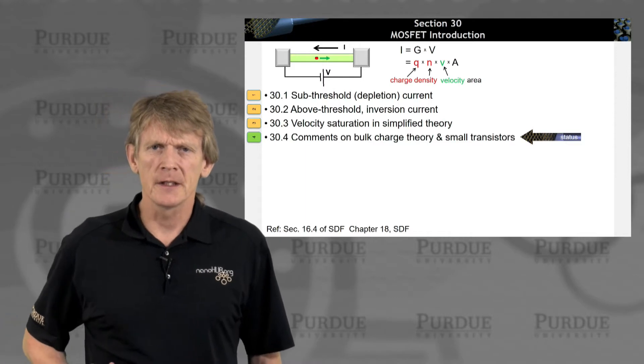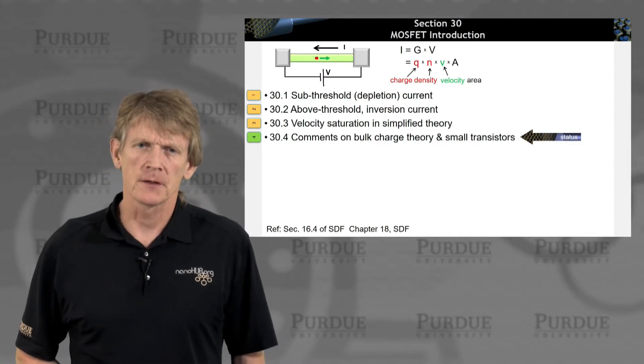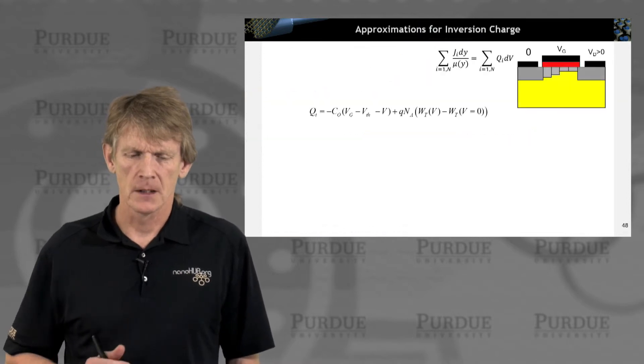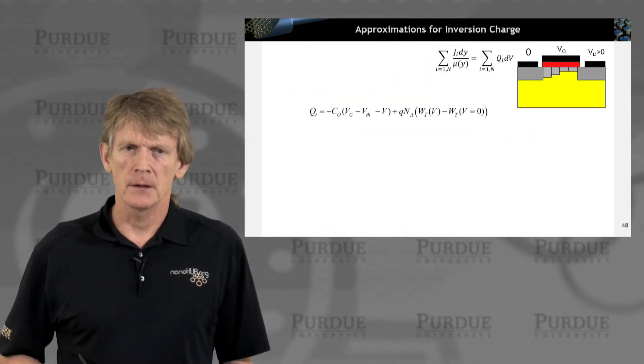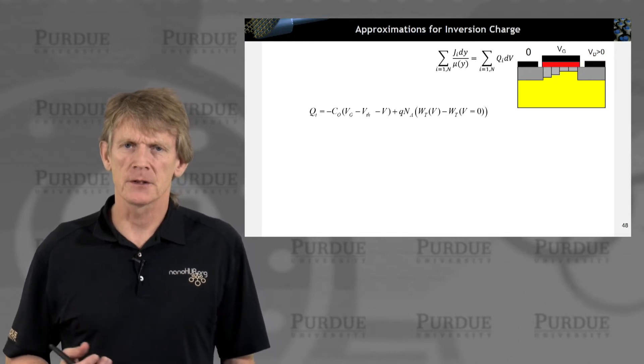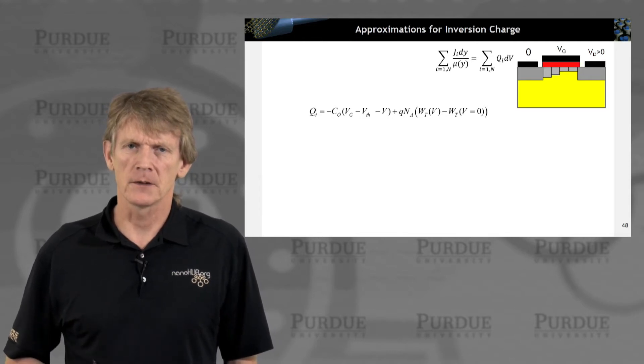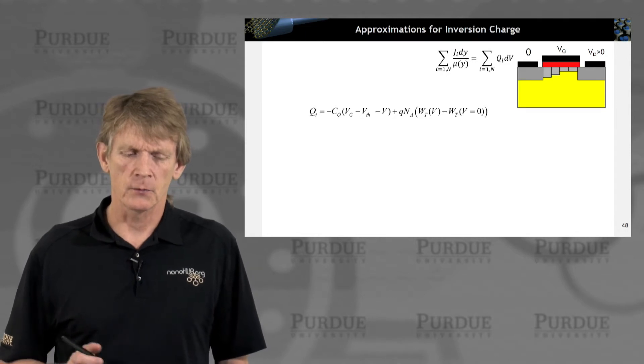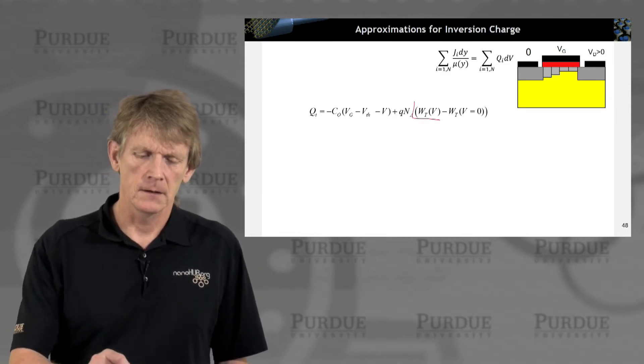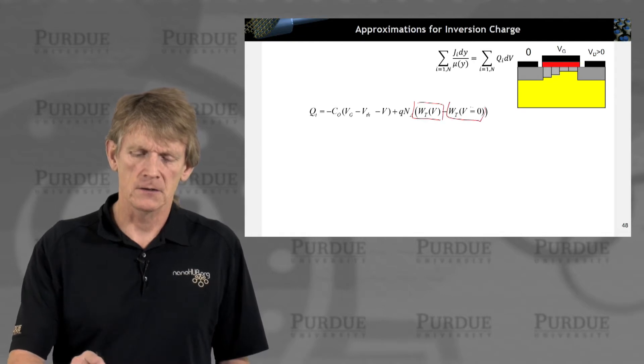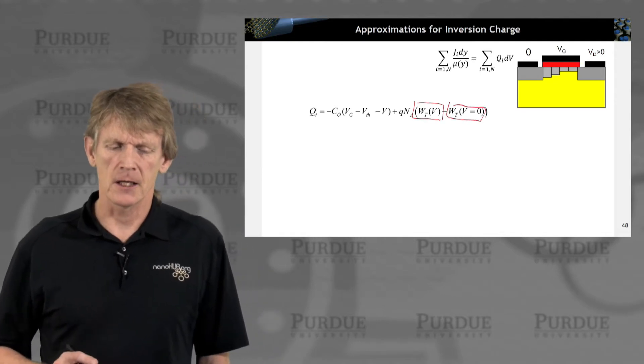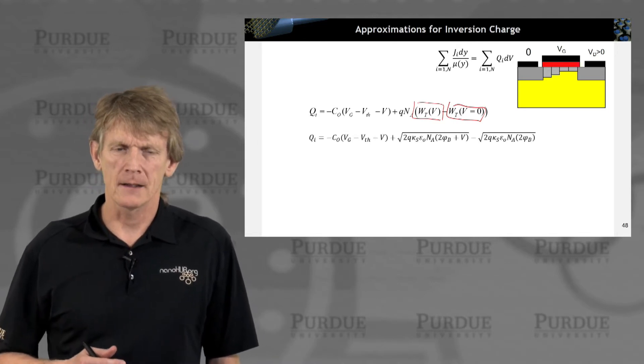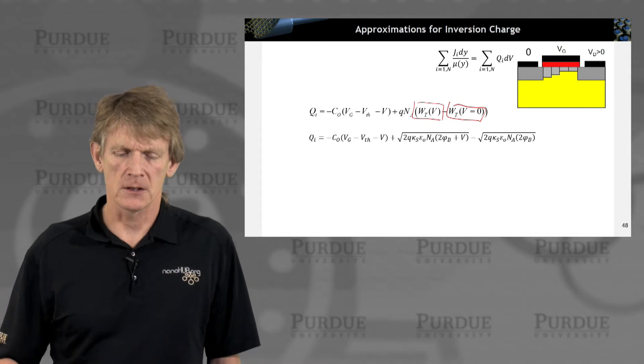All right. Let me conclude the MOSFET introduction with some comments on the bulk charge theory and on small transistors. In the past segments, we calculated the inversion charge in the semiconductor and wrote down expressions where we had the width of the charge distribution throughout the channel considered. And we derived some more lengthy expressions for this inversion charge.